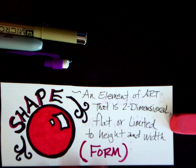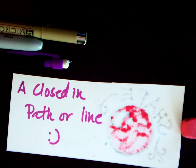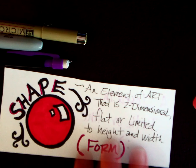An easy way to think of this is form. I always say to my students it's a closed path or line. The shape is the path that the line has made to create the form inside, which is called the shape.